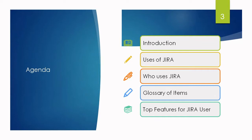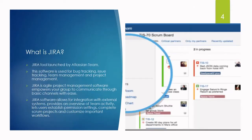Who uses Jira frequently, the functionality available in Jira, and top features for Jira users. First of all, what is Jira and when was it launched? Jira was launched by the Atlassian team. The software is used for bug tracking, issue management, test case management, and project management. Jira is a work management tool for software teams that need to be organized and track their work. It is incredibly flexible and can be customized to work with our team's unique workflow.